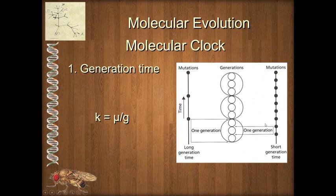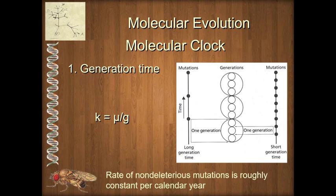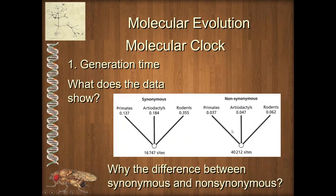Indeed, it followed an absolute time on how many mutations accumulate per year. And so people begin looking for an explanation for this. And it turns out that the data seem to support this idea that the non-deleterious mutations are very roughly constant per calendar year, not per generation time. And so there are a couple of ways we can look at this.